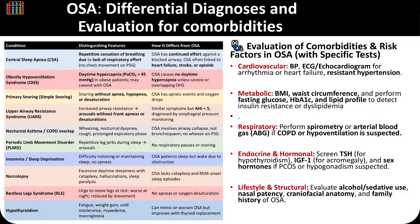Differential diagnosis of OSA includes several sleep and respiratory disorders with overlapping symptoms. Central sleep apnea involves pauses in breathing due to absent respiratory effort rather than airway obstruction, often associated with heart failure or opioid use. Obesity hypoventilation syndrome presents with daytime hypercapnia in obese patients, while simple snoring lacks apneas or desaturations. Upper airway resistance syndrome causes arousals from increased airway resistance without frank apneas. Nocturnal asthma or COPD overlap leads to wheezing and nocturnal dyspnea, and periodic limb movement disorder produces sleep fragmentation from repetitive leg jerks. Other mimickers include insomnia, narcolepsy, restless legs syndrome, and hypothyroidism, which can worsen or resemble OSA.